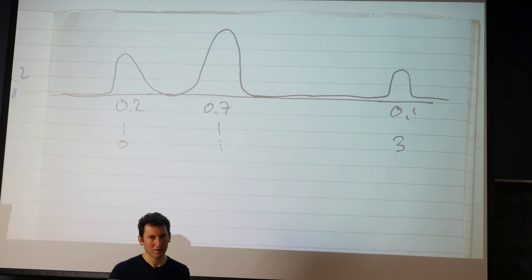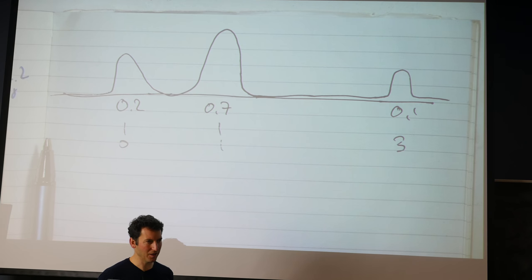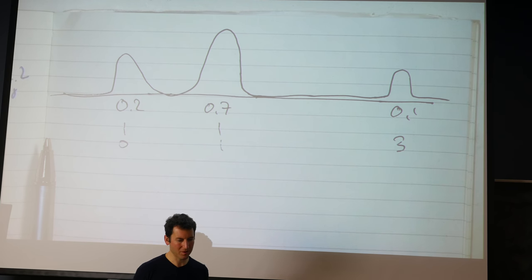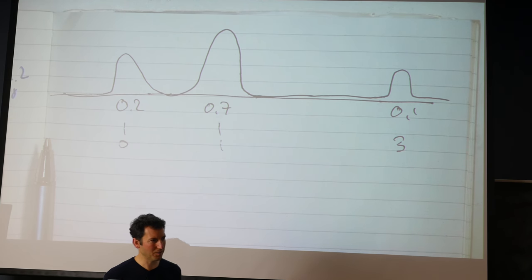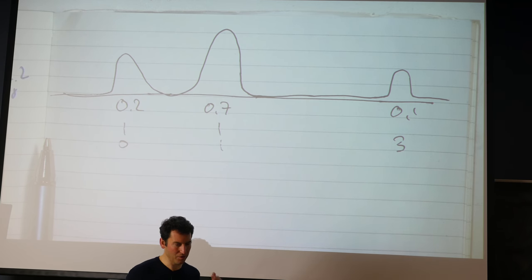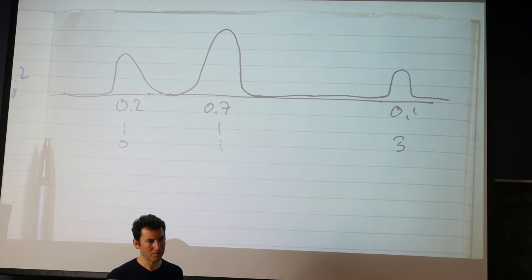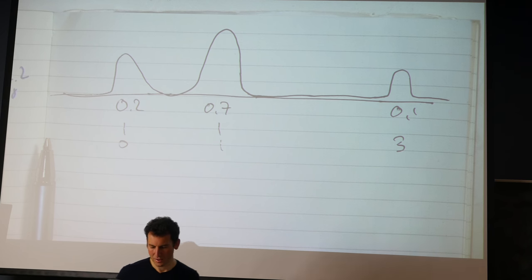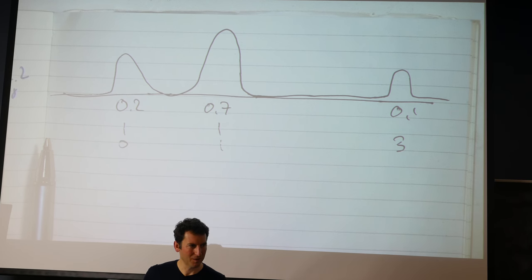Symmetry is a really good guiding principle when you engineer priors. If you don't have any specific prior knowledge of what the solution should be, you can say that at least it should be symmetric under certain changes. On the other hand, if you have good knowledge of how the distribution should look — for instance, you should expect to see only a small number of non-zeros — then you can do further engineering on that.